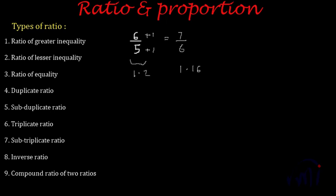So 1.2 is greater than 1.16. That means if you have a ratio of greater inequality where the antecedent is more than the consequent, and you add some constant — say 'a' — to both numerator and denominator, the resultant ratio, which will be (6 + a) divided by (5 + a), will always be lesser than the original ratio.